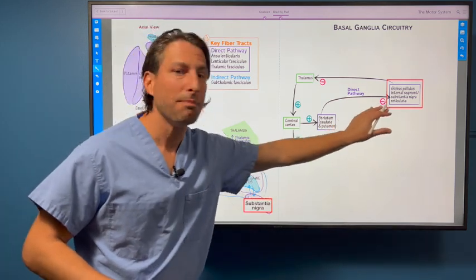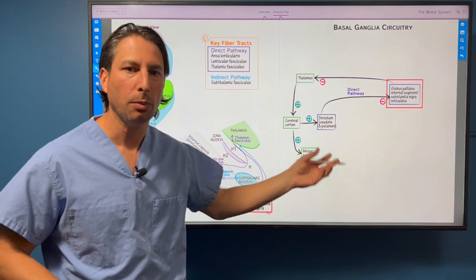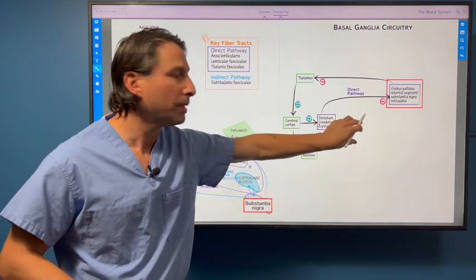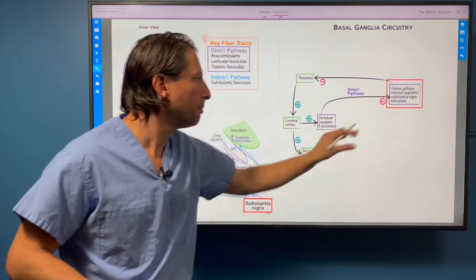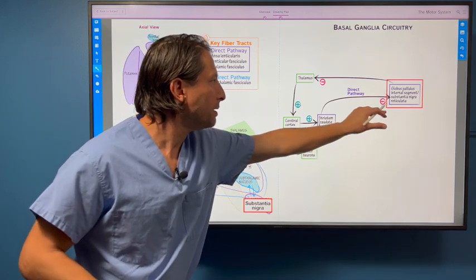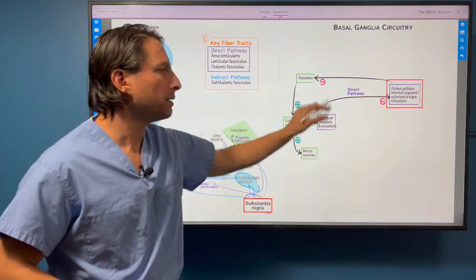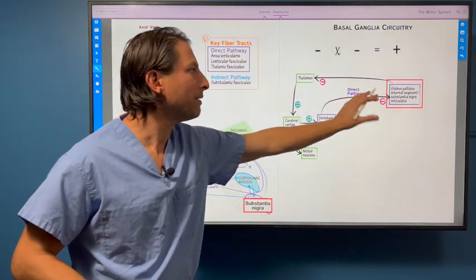This is not the pars compacta, which is the part of the substantia nigra that has dopaminergic cells. We're going to put that in towards the end. But the substantia nigra pars reticulata is part of the direct pathway. So there's inhibition of an inhibitory structure, so there's overall excitation. And we go through the simple math right there.